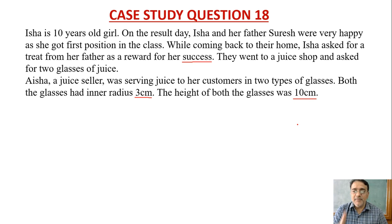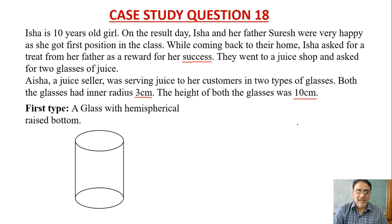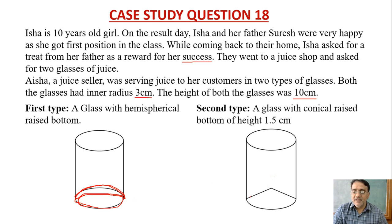The shape of the first glass has a hemispherical raised bottom. This is the hemispherical raised part at the bottom. The second glass has a conical raised bottom with height 1.5 cm. This is the circular base and this is the conical part. Figure is clear? Yes sir.